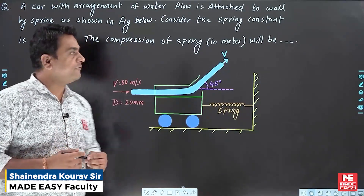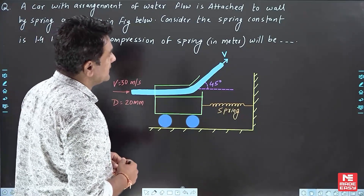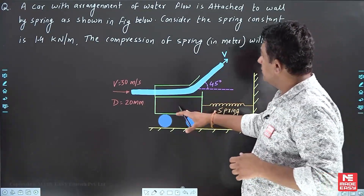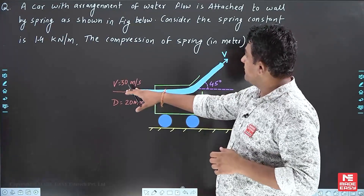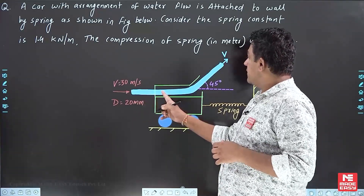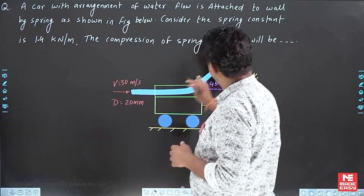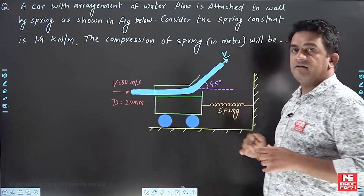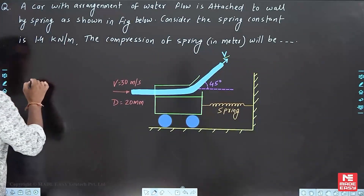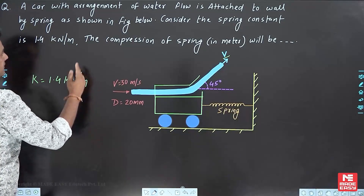Let us move to another question from impact of jet. The question says a car with an arrangement of water flow is attached to the wall by a spring as shown in the figure. There is a car over which a jet is coming with velocity 30 meters per second and diameter of the jet is 20 mm. The jet hits the car and gets deflected by 45 degrees, leaving with the same velocity v. The spring constant k is given as 1.4 kilonewtons per meter.